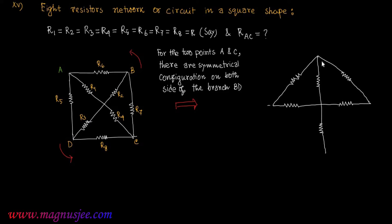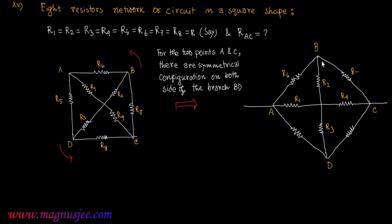If the circuit is rotated in the anti-clockwise direction, the branch BD becomes vertical and the different resistances in this network are R1, R2, R3, R4, R5, R6, R7, and R8, with R6, R7 and R7, R8 on respective sides.